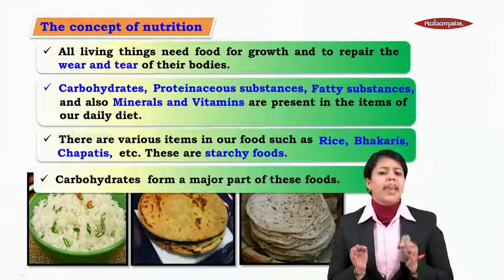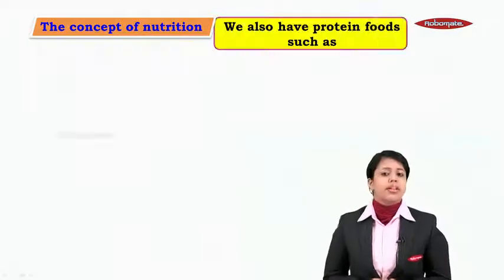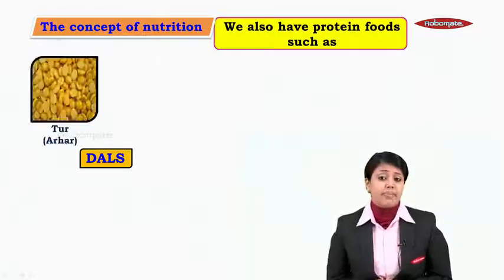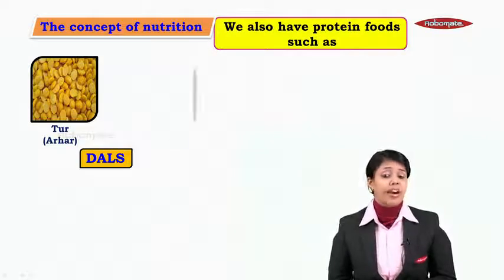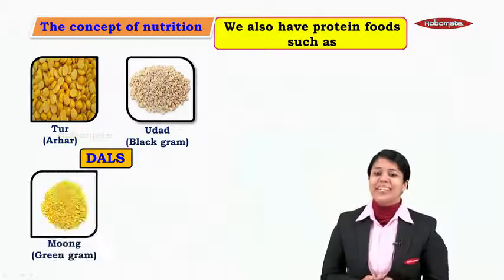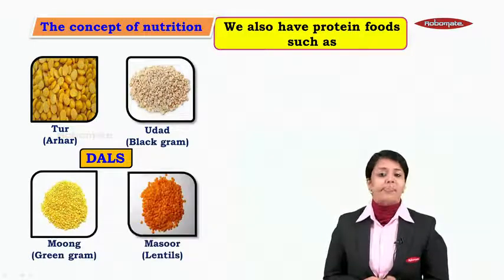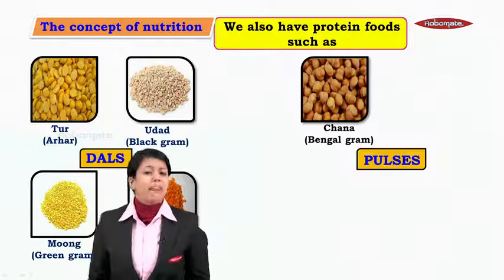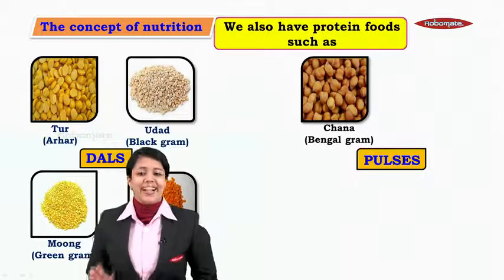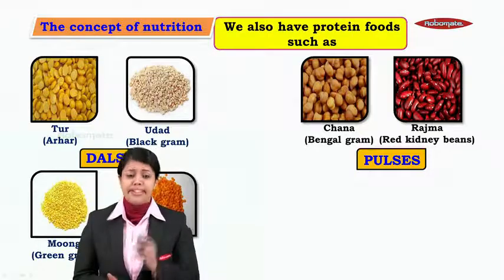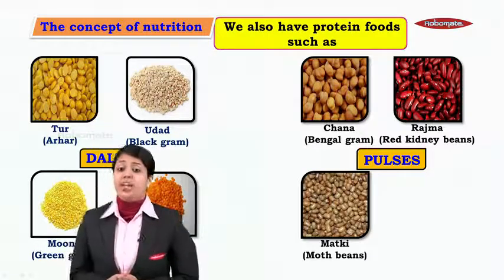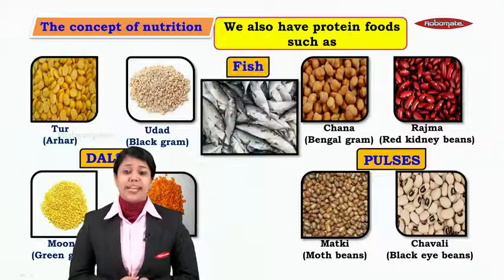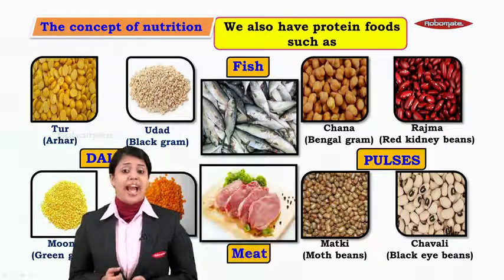We also have protein foods such as dals. Different types of dals include tur (also called arhar), udad (black gram), moong (green gram), and masoor (lentils). Protein food also includes pulses — chana (Bengal gram), rajma (red kidney beans), matki (moth bean), and chowli (black-eyed bean).